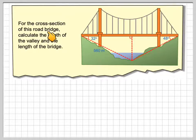For the cross-section of this road bridge, calculate the depth of the valley and the length of the bridge. So identifying what we need to calculate, we need to calculate this depth here, or this length of this triangle here, and then the total length of the bridge.